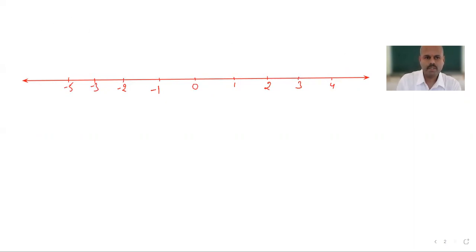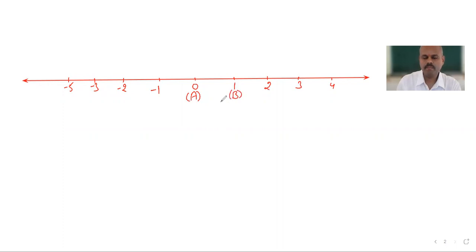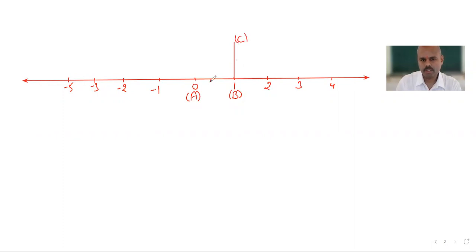Now, if you remember what we did for √2, we are going to do the same thing first. We mark 0 as point A and 1 as point B, then we draw a line perpendicular to the number line at B, equal to 1 unit, and name this point C.